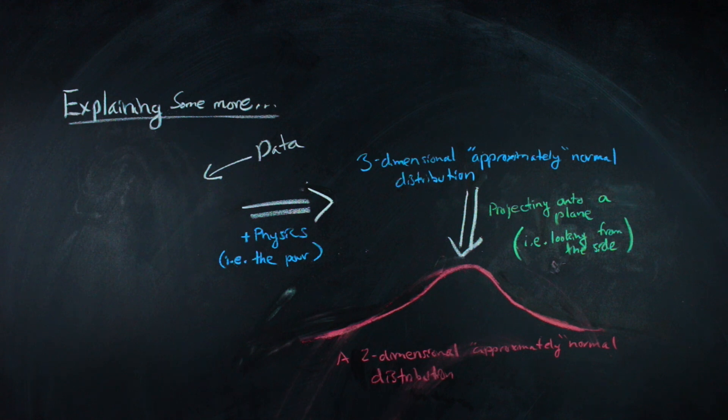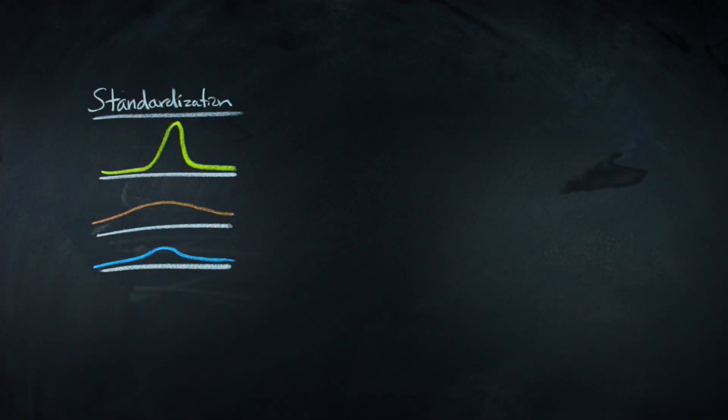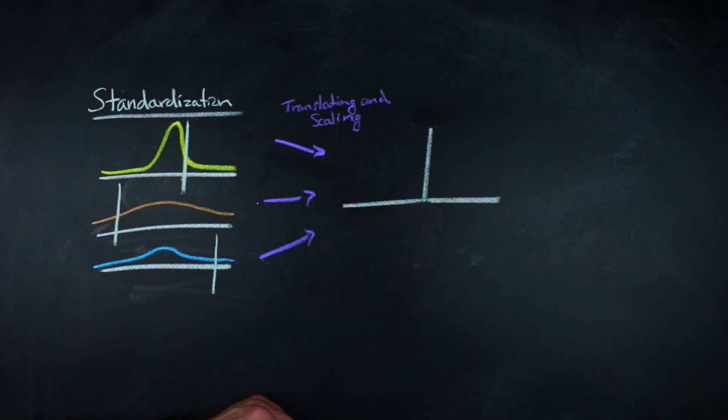The normal curve is fairly well understood, and it comes up all over the place. One thing that makes these curves easier to work with is that every normal curve can be translated and scaled to have a mean of zero and a variance of one.